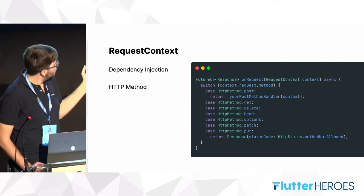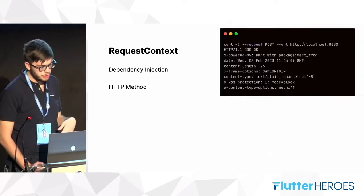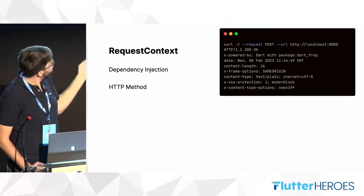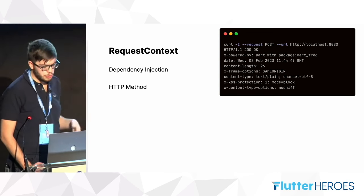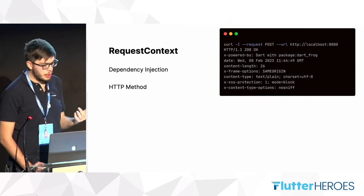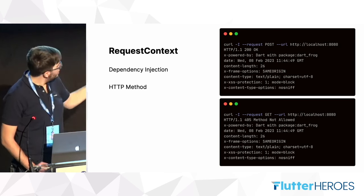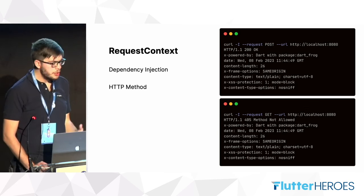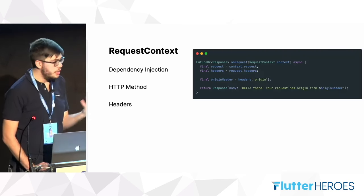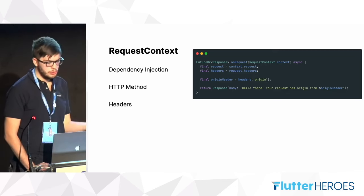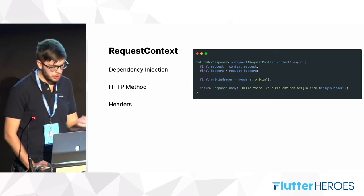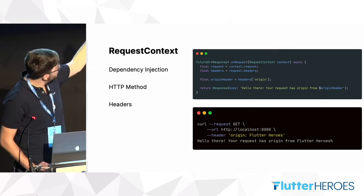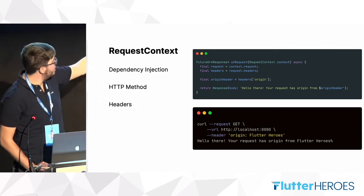If we try to reach the route with a POST method request, we get a 200 OK response. With a GET request, we'll get a 405 Method Not Allowed error. Inside the request context, we can also get the headers to do checks and customize the response — for example, adding the origin header to the body of the response.